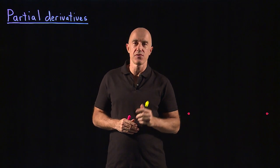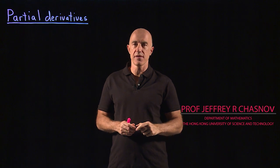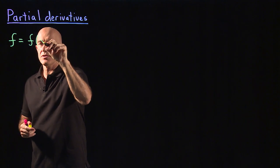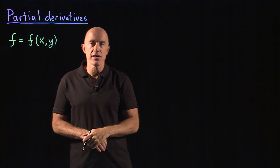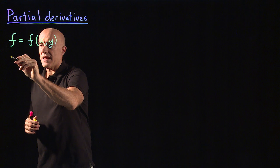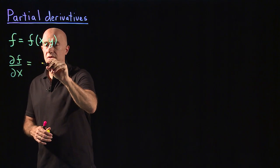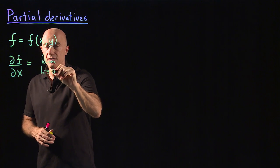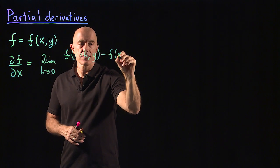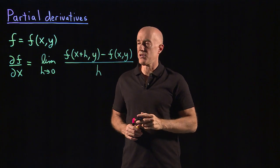Let's talk about how to differentiate functions of several variables. This is called the partial derivative. If we have a function of two variables, x and y, and we want to differentiate with respect to x only, that's called a partial derivative. We write that as the partial of f with respect to x, and that's equal to the limit as h goes to zero of f(x+h, y) minus f(x, y) divided by h. That's the formal definition of the partial derivative.